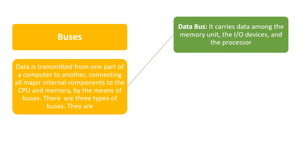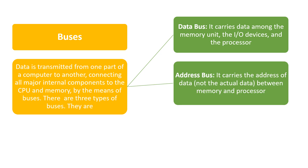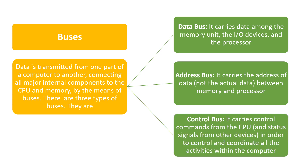There are three types of buses. The data bus carries data among the memory units, I/O devices, and the processor. The address bus carries the address of the data between memory and the processor. The control bus carries control commands from the CPU and status signals from other devices in order to control and coordinate all activities within the computer.